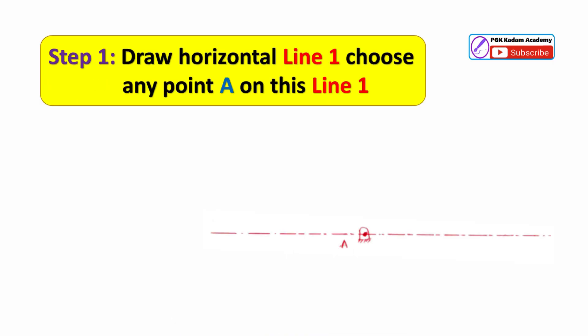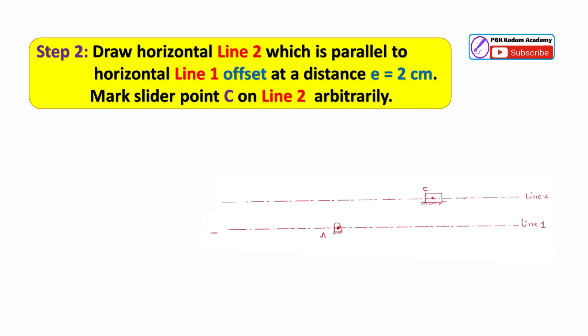Step 1: Draw horizontal line 1 and choose any point A anywhere on this line. Step 2: Draw offset line 2, which is the line of action of the slider at an offset distance of 2 cm from line 1. Draw horizontal line 2 parallel to horizontal line 1, offset at distance E equal to 2 cm.